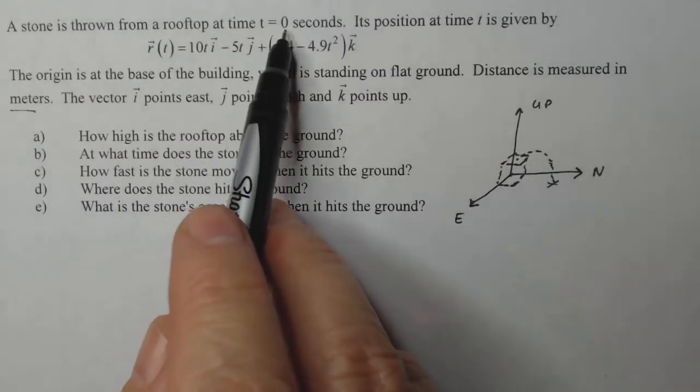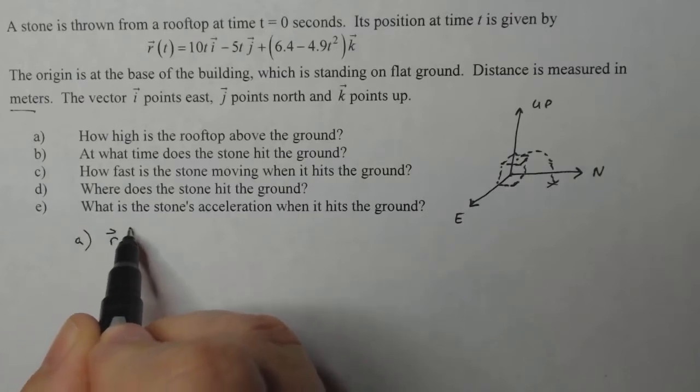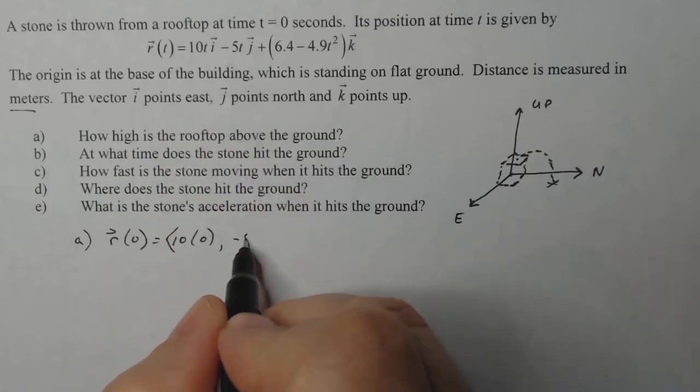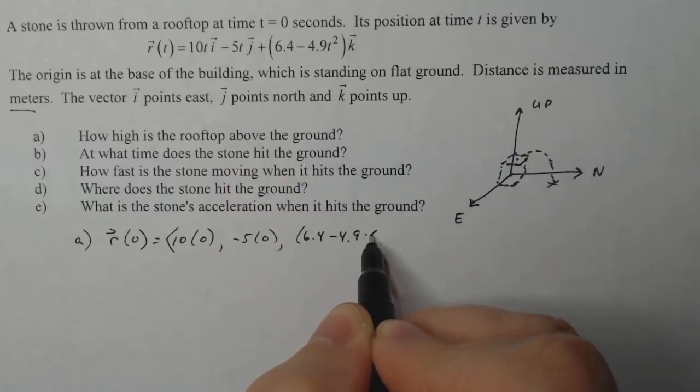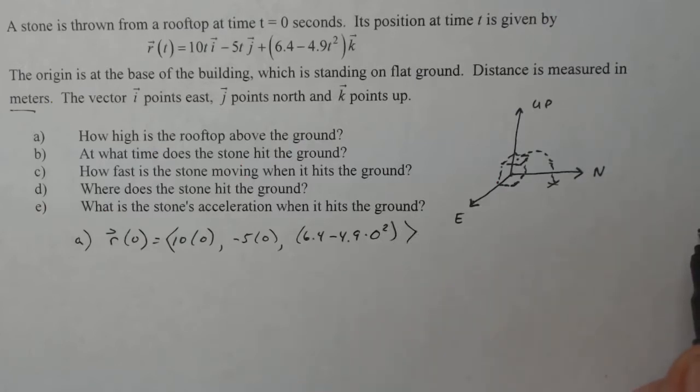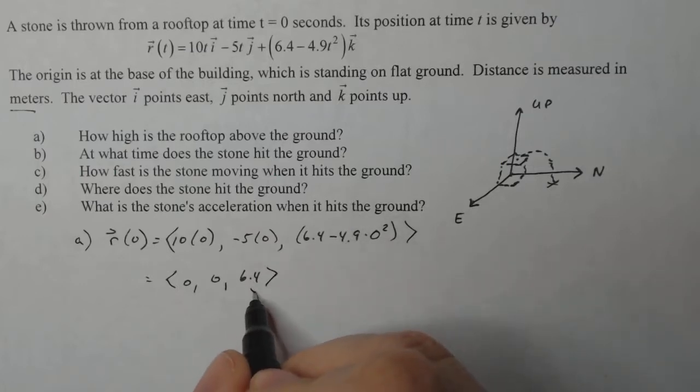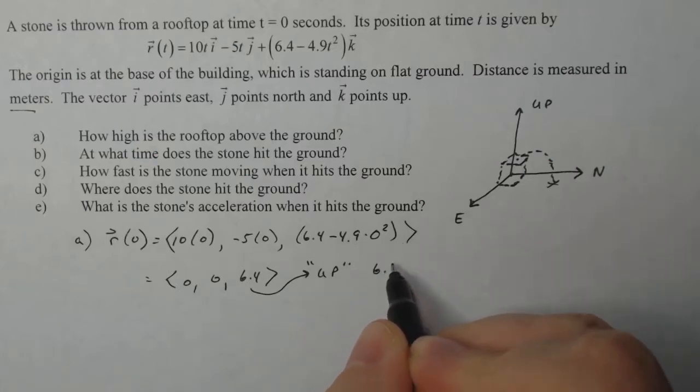Well, the stone is thrown from the rooftop at time t equals zero. So if I haven't thrown it, time t equals zero is what time it is. So part a is actually just evaluating r of zero, which gives me 10 times zero i minus five times zero j and then 6.4 minus 4.9 times zero squared k. That will give me 0, 0, 6.4. Now k remember means the up part, so in other words, how high I am upwards. So how high is the rooftop up off the ground? It's 6.4 meters.